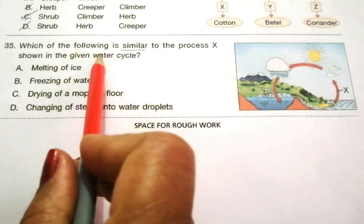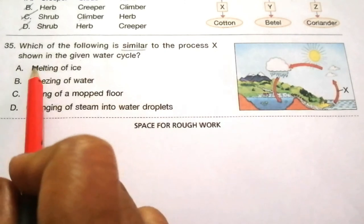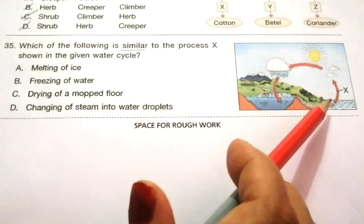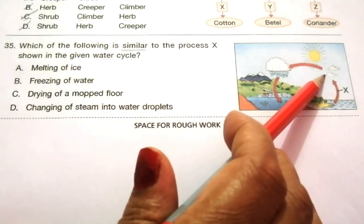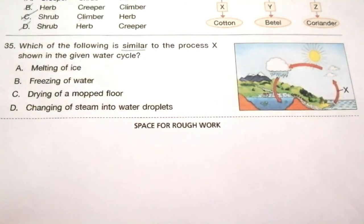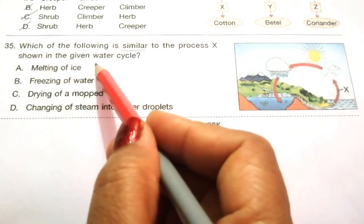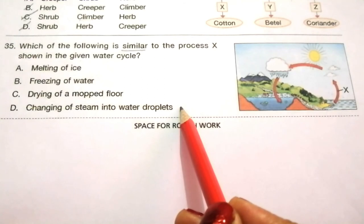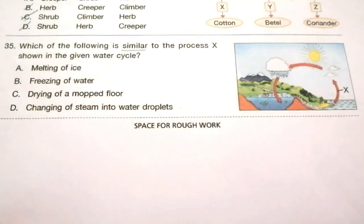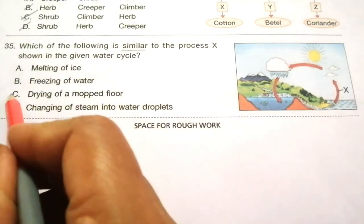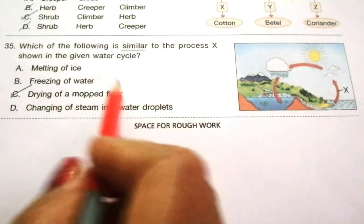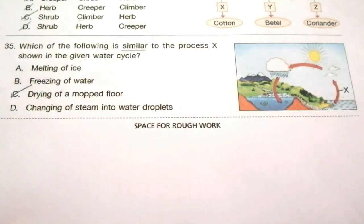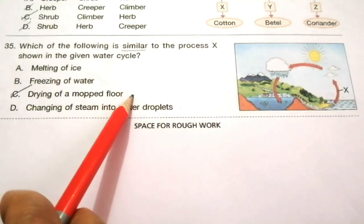Question 35: Which of the following is similar to the process X shown in the given water cycle? In X process, water is converted into water vapor, so X is evaporation process. The options are melting of ice, freezing of water, drying of a mopped floor, changing of steam into water droplets. The answer is C, drying of a mopped floor - this is an example of evaporation process. This is also one of the frequently asked questions.